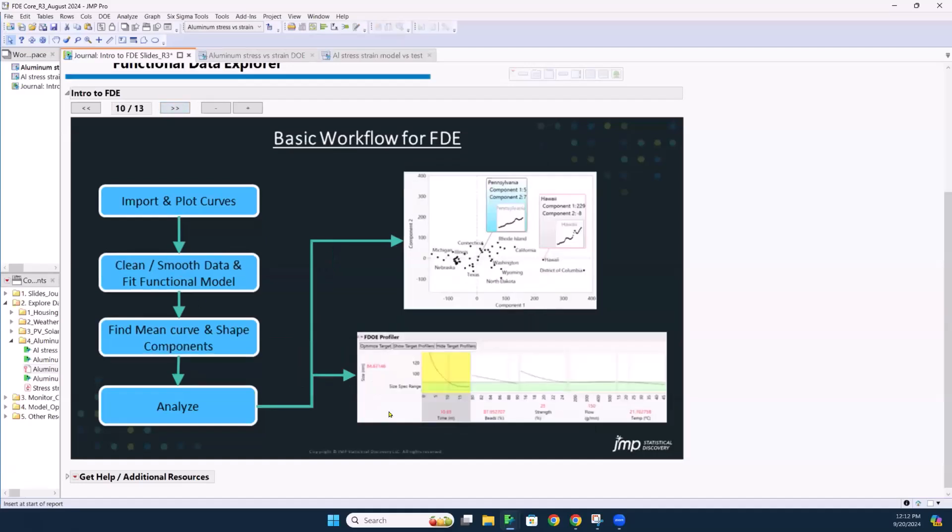Then we end up in Analyze. If you wanted to go look at maybe FPCA scores and clustering. But most folks are going to end up down here, which is the functional design of experiments profiler, where our response in this case is just a curve like this. And then we have our x inputs. And of course, we can scroll our inputs sliders and see how that changes. So for those who have seen the profiler before, we're going to get there for a curve. Okay, that's kind of the basics of the background.